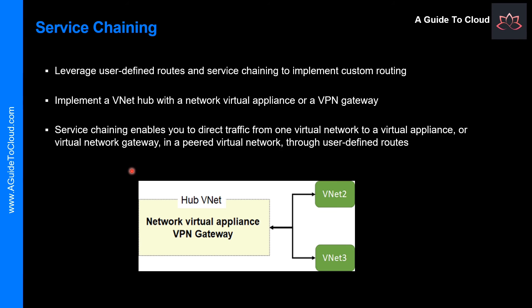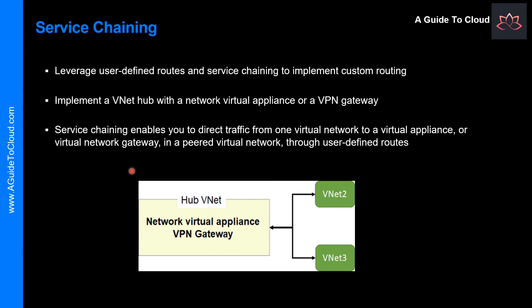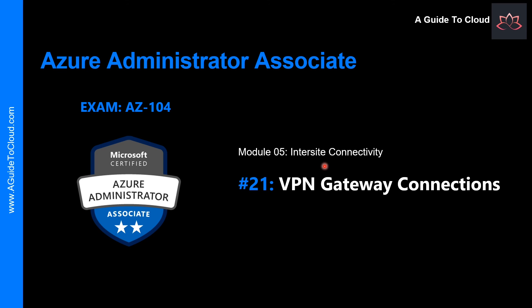You can check the status of VNet Peering by looking at whether it shows as Updating or Connected. When you create the peering to the second virtual network from the first, the peering status is called Initiated. When you then create the peering from the second virtual network back to the first, the status changes from Initiated to Connected. Now we understand what VNet Peering is — in the next lesson we're going to learn about VPN gateway connections. See you in the next video.